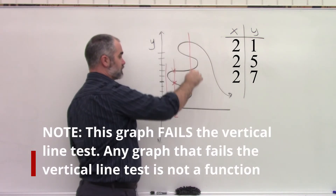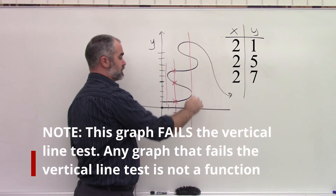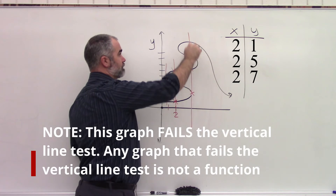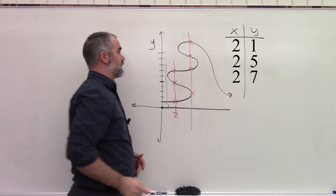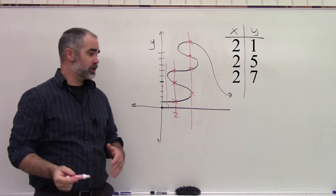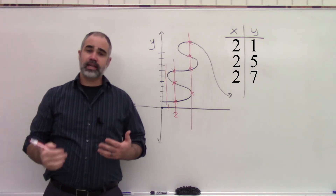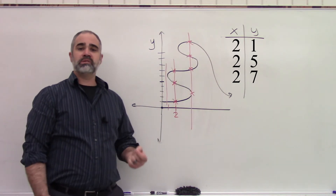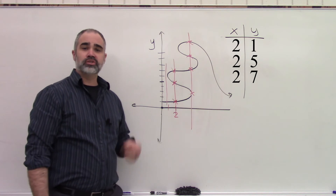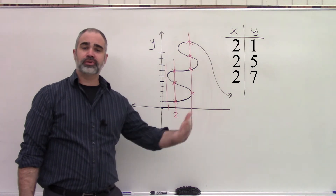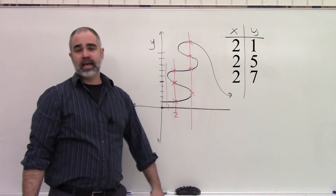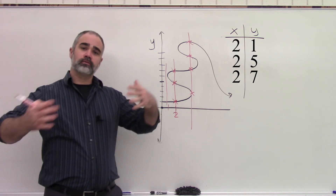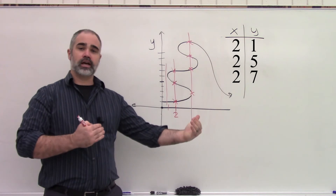And so likewise, when you see this result, that means you have something that is not a function. Right here, again, we see one, two, three, four different options for one input. And visually, you can see that one input is leading to multiple different outputs. That's really what defines a function versus something that is not a function.